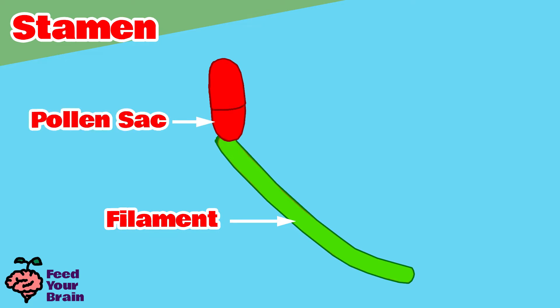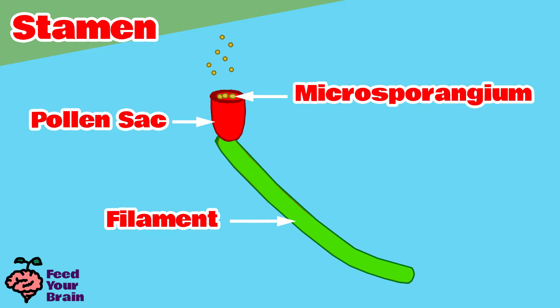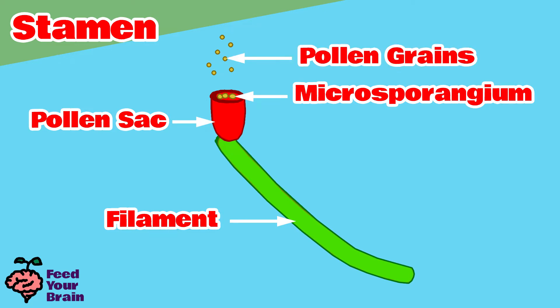Let's cut this one open, remove the top, and look inside. This is the pollen sack, because this is where the pollen grains come from. The pollen grains start out as microsporangium, and then mature and grow to become the pollen grains that are released onto the outer pollen sacks or anthers.